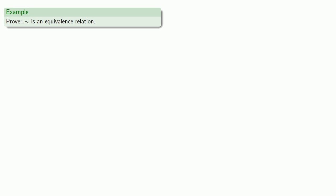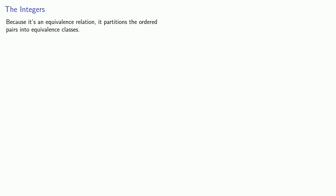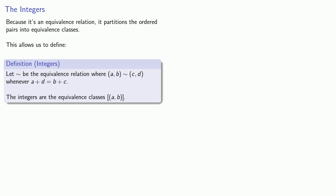Well, squiggle is a relation. Let's prove that it's an equivalence relation. Well, no. You should do your own homework. But it is an equivalence relation. And because it's an equivalence relation, it partitions the ordered pairs into equivalence classes. And this allows us to define the integers as follows. Let squiggle be the equivalence relation. The integers are the equivalence classes.